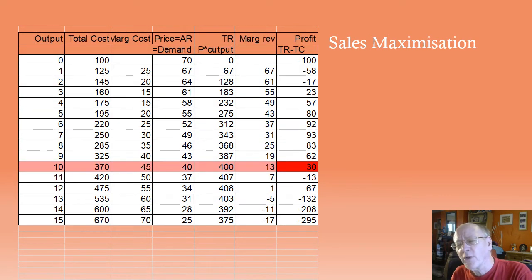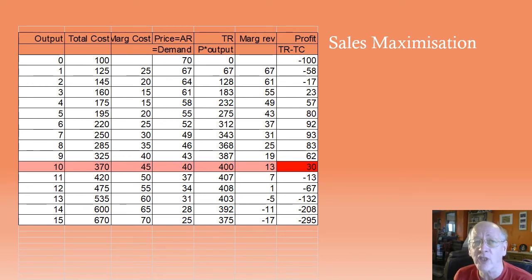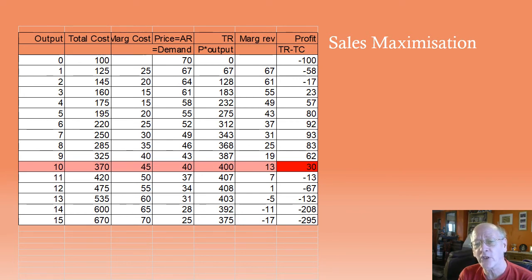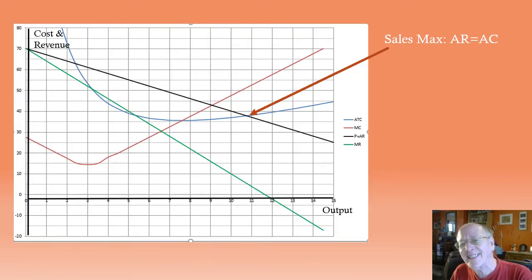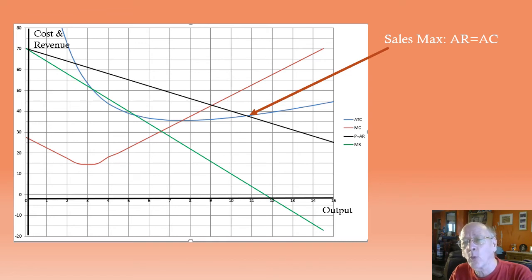What about the sales maximiser? The sales maximiser would typically be in a business where success is shown by the number of units you sell — for example, selling records or selling books. Remember, this firm cannot make a loss. So we need to look down the profit column and find the point at which the firm is not making a loss. At an output of 10, they're making a profit of 30, but if they make 11, they're making a loss of 13. So we're looking at what is going on between 10 and 11. Between 10 and 11, you can see that the AR curve — the average revenue demand curve — is cutting the AC curve. If profit is the difference between revenue and cost, and we are not making a supernormal profit at all, then it implies that cost equals revenue. So the conditions for sales maximisation are: average revenue equals average cost.